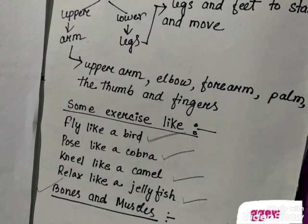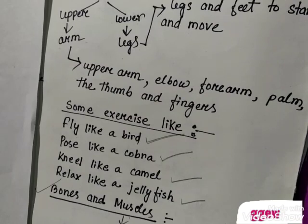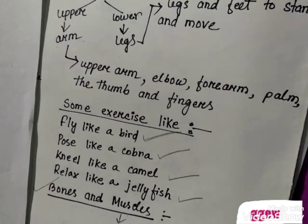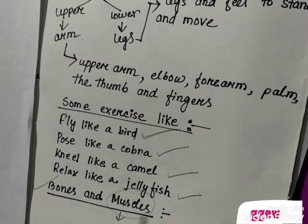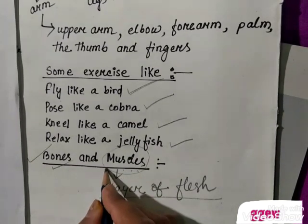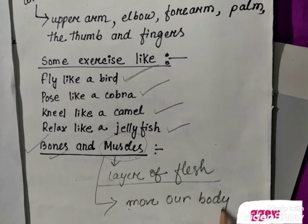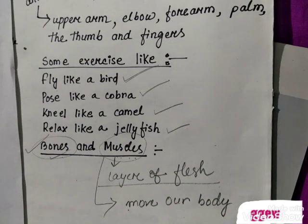Now, bones and muscles. Bones are very important because they give the framework of our body, and bones are the hardest part of our body. Muscles are the layer of flesh that joins the bones together, and with the help of muscles we can move our body. In the next video I will tell you about the sense organs.